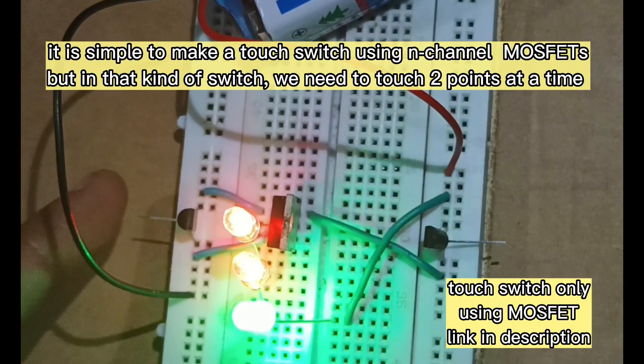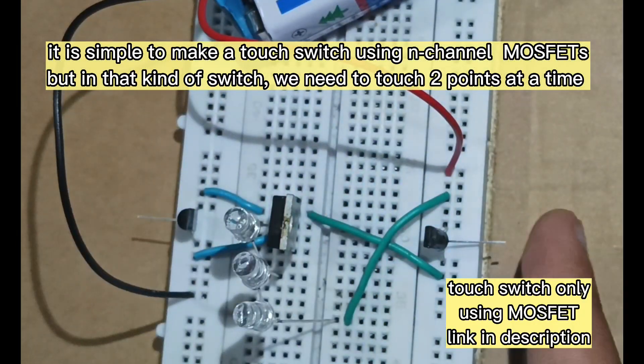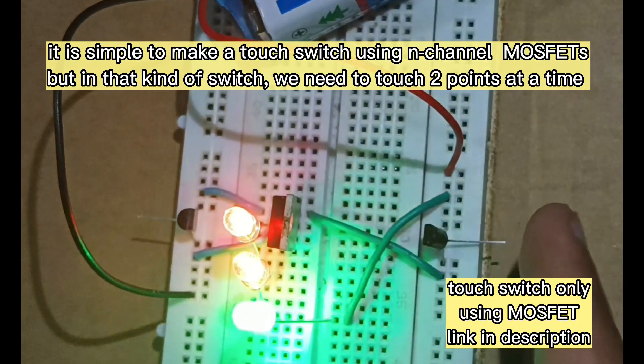It is simple to make a touch switch using n-channel MOSFETs, but in that kind of switch, we need to touch two points at a time.